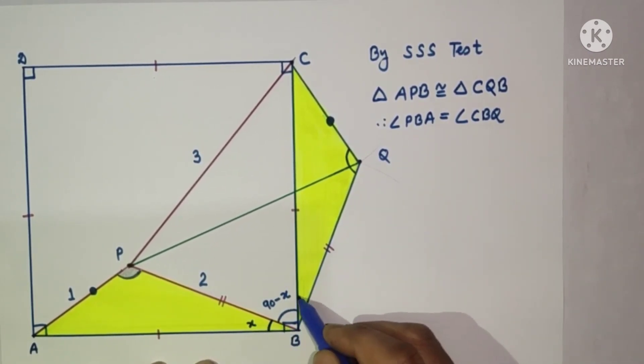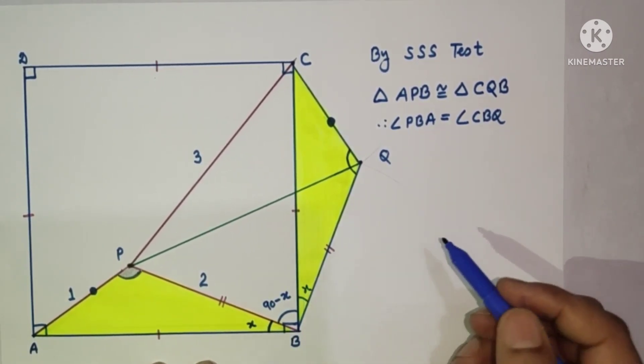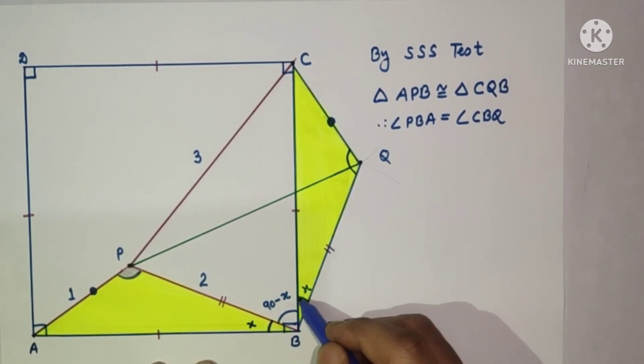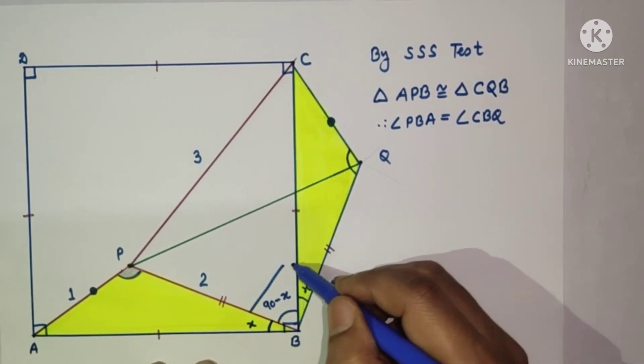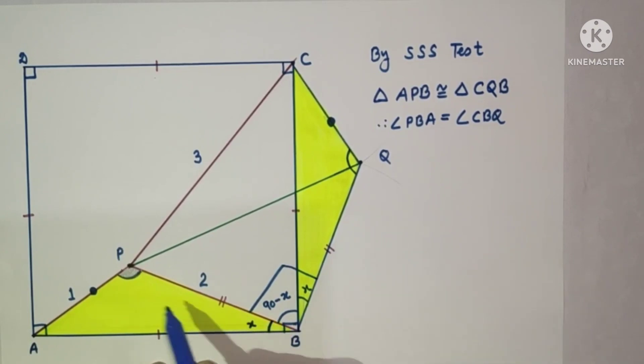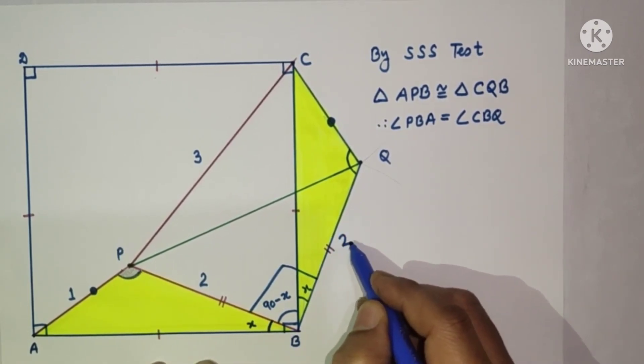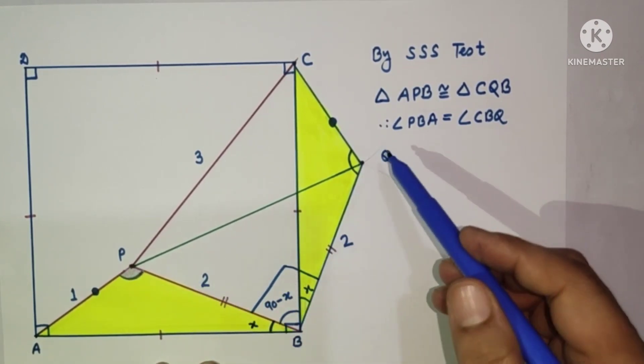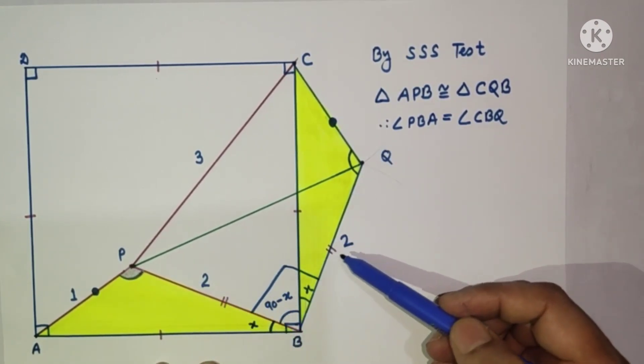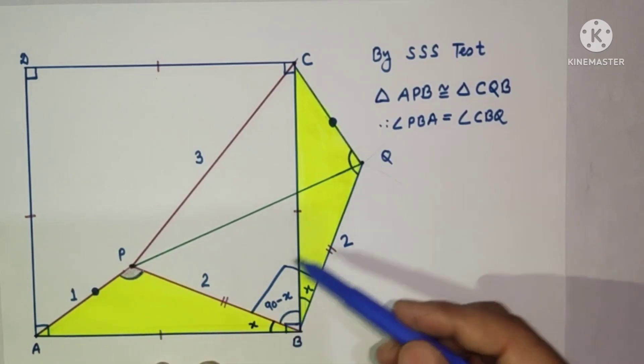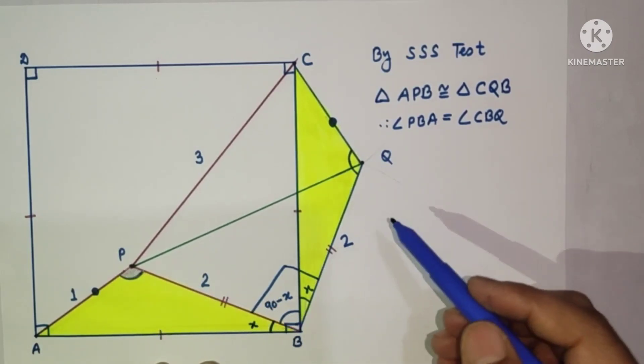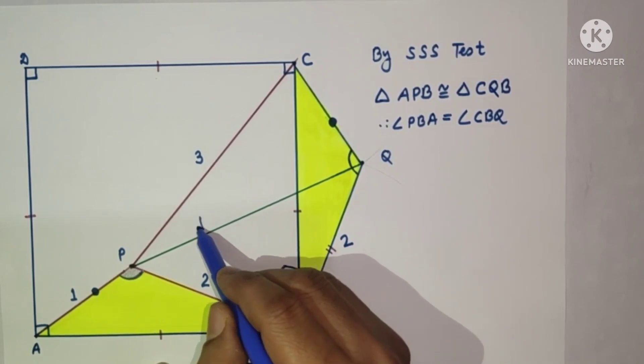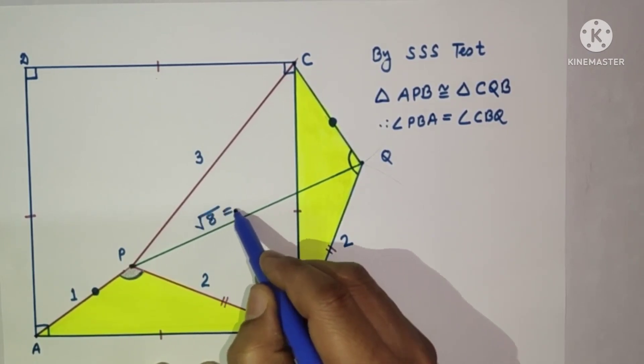So if this is x, then this will also be x. But this is 90 minus x, this is x, so this total angle, angle PBQ, will be 90 degrees. This is 90, this is 2, so this will also be 2. Now in this right-angle triangle PBQ, this is 2, this is 2. By Pythagorean theorem, PQ squared is 2 squared plus 2 squared is 8, so PQ is equal to 2 root 2.